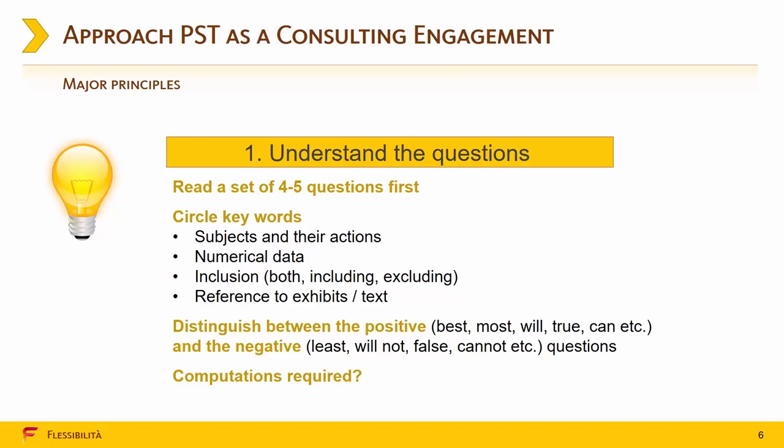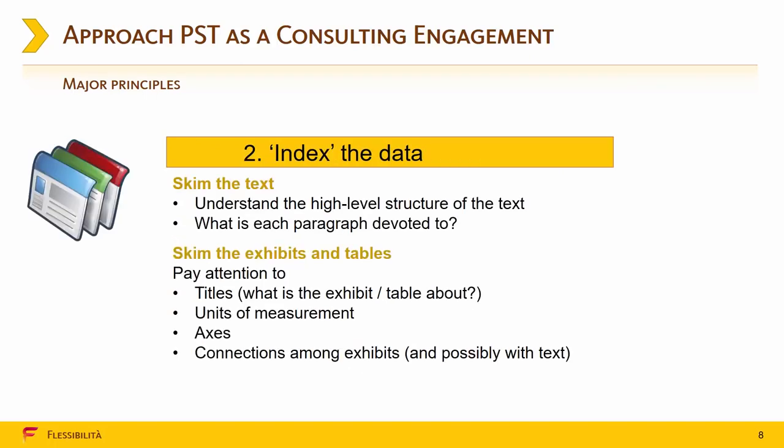Step number 2: Indexing the data. We need to skim the text and skim the exhibits and tables. We don't need to read them in detail. We just need to understand what's going on in the text and what's going on in each paragraph of the text. When skimming exhibits and tables, we need to pay attention to titles, units of measurement, axis and connections among exhibits. Again, we are not looking for trends. We are not looking for too specific detail. We just need to understand what's going on in the text or in the tables or in the exhibits. We just need to index the data so that we can come back to them if needed.